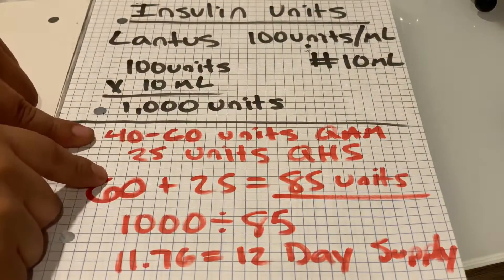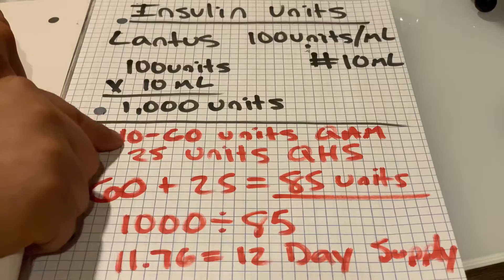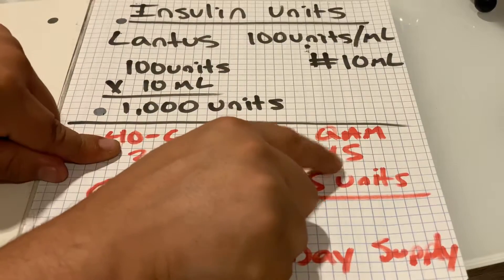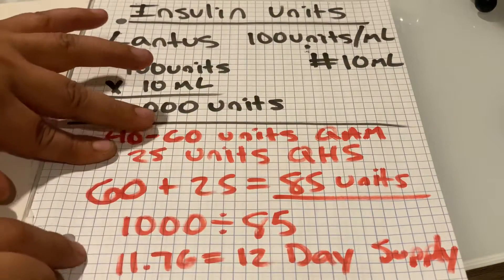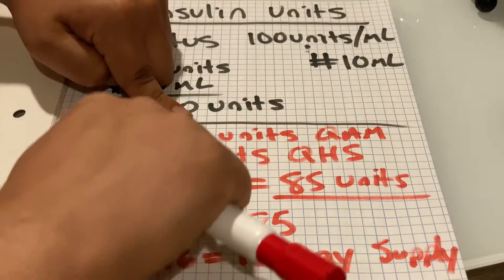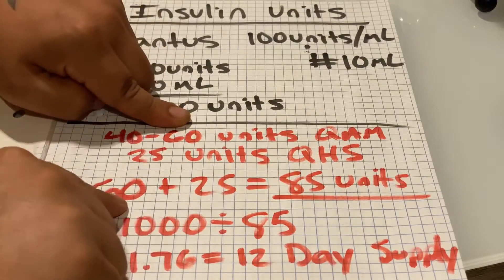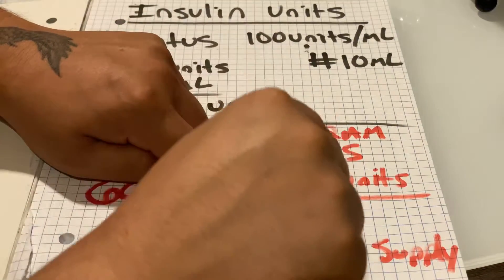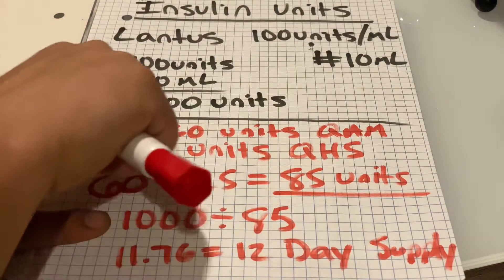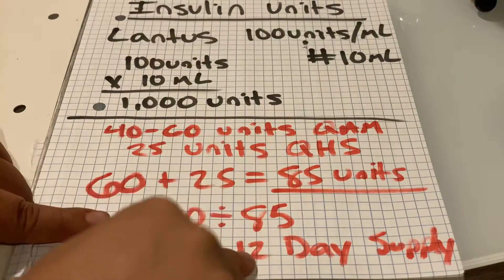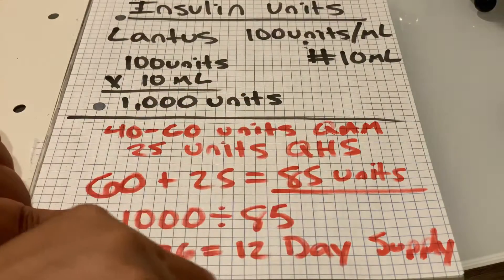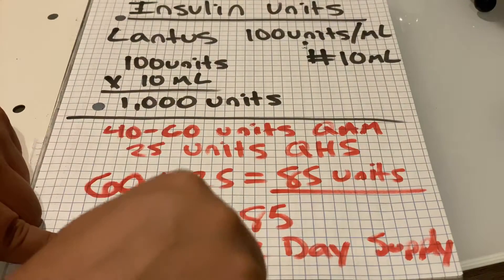Here are the directions in red. If the doctor is asking you to use 40 to 60 units daily in the morning QAM, and 25 units QHS at bedtime, we're going to assume the patient will use the most, which is 60. Then they're using 25, so added together gives you 85 total units per day. To figure out your day supply, take that 1,000 units we figured out first, divide it by the 85 units they're using per day, which gives you 11.76, rounded up to a 12-day supply.